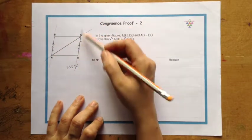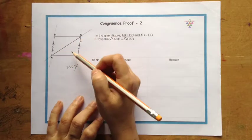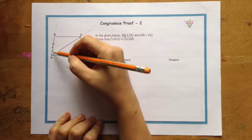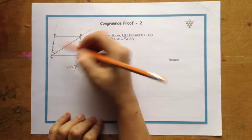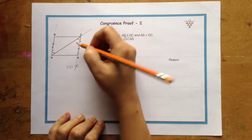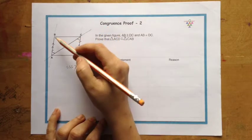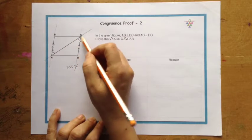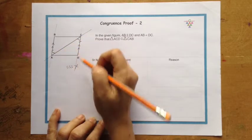So whenever you have a pair of parallel lines and a transversal, you have a set of angles which are equal. Like for example, this angle and this angle. These will be alternate interior angles and they are equal. So BAC and DCA will be congruent to each other.